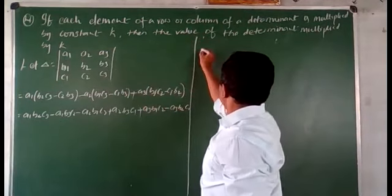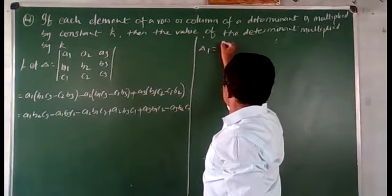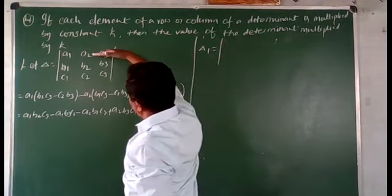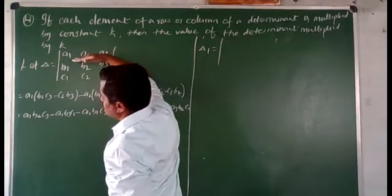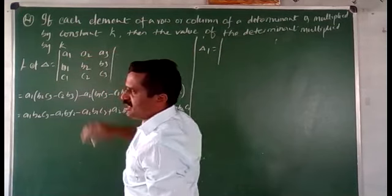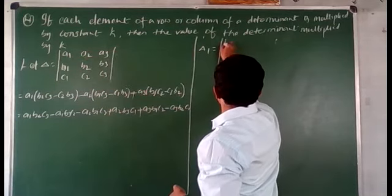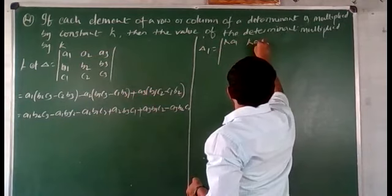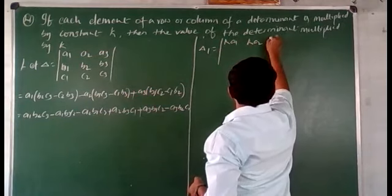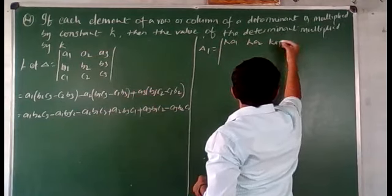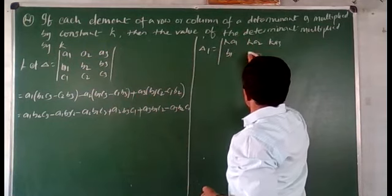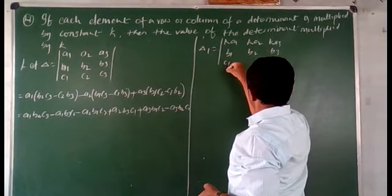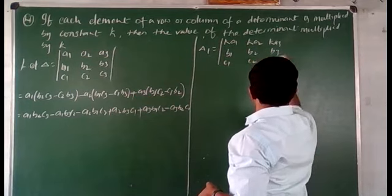Let delta1 be the determinant obtained by multiplying the first row by constant k. So that is k·a1, k·a2, k·a3 in the first row, with b1, b2, b3 and c1, c2, c3 remaining the same.